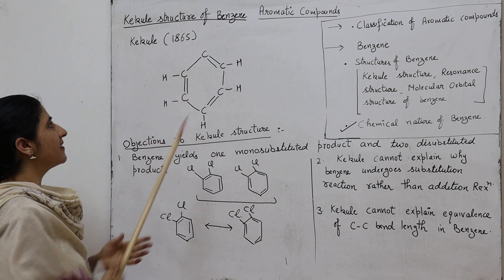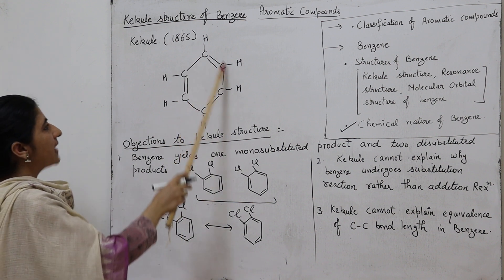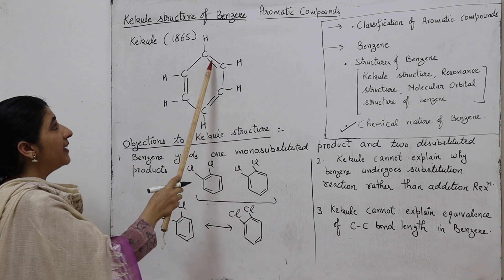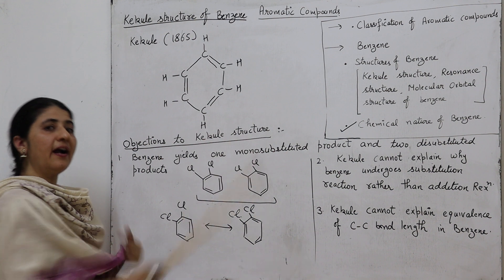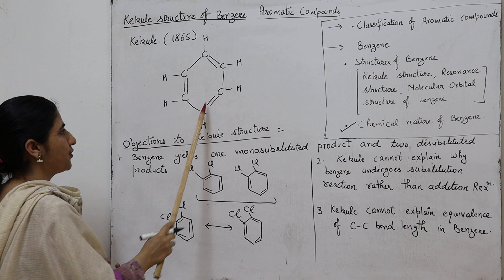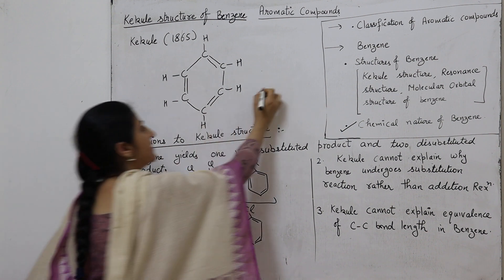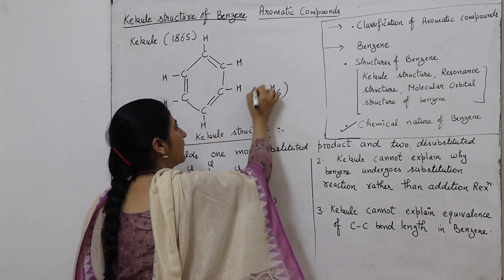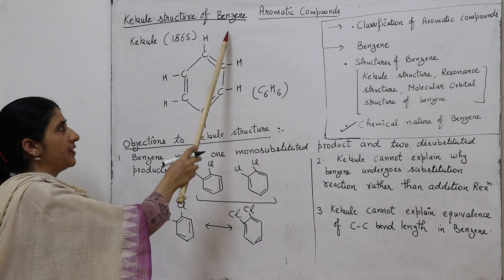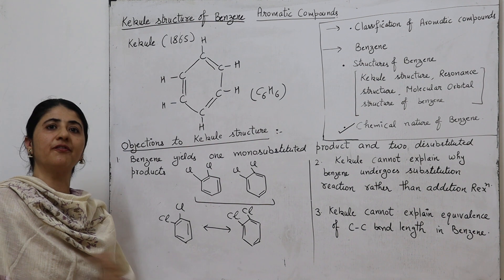According to Kekulé's proposal, benzene has six carbon atoms, all joined to each other in the form of a ring, having single and double bonds in an alternating manner, and each carbon has one hydrogen. The molecular formula of benzene is C6H6. However, there are some objections to the Kekulé structure of benzene. What are the different objections — or we can say the limitations of the Kekulé structure of benzene?